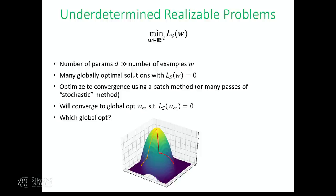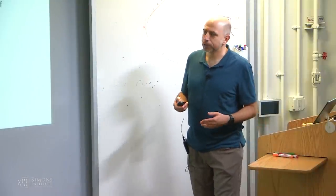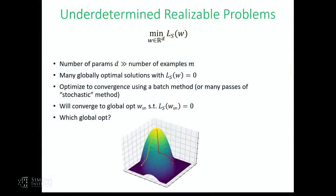We're going to spend some time talking about the problems that historically arose with these underdetermined problems. We're talking about problems of minimizing the training error where the number of parameters D — sometimes called P — is much bigger than the number of examples. So the problems are underdetermined. There are typically many global optima that have zero error. We're going to optimize using some geometry and converge to some global optima w-infinity — the limit of your optimization procedure.